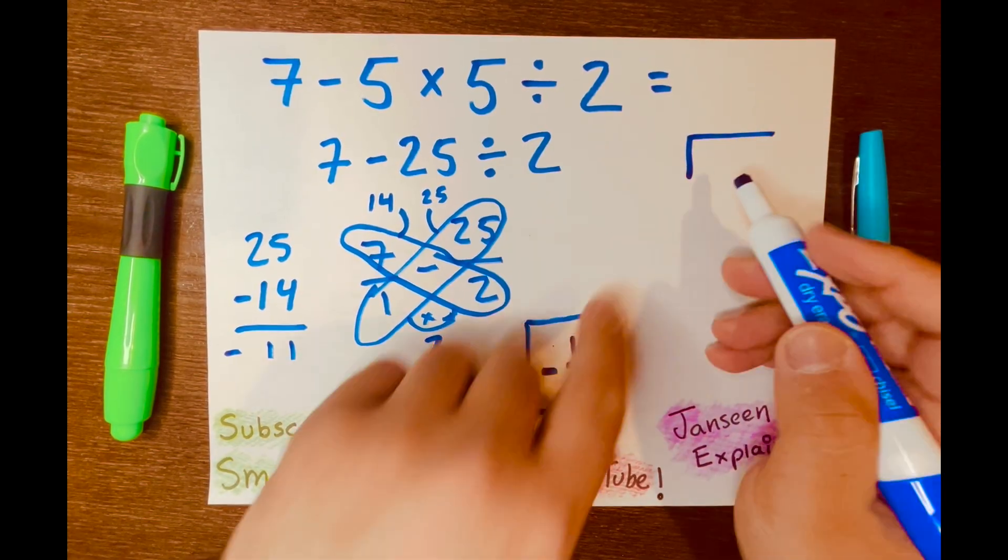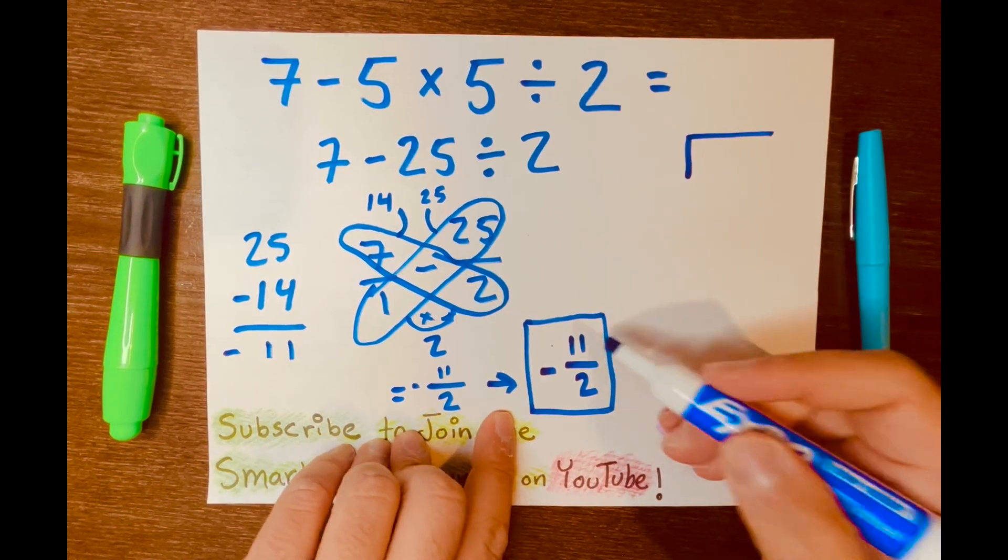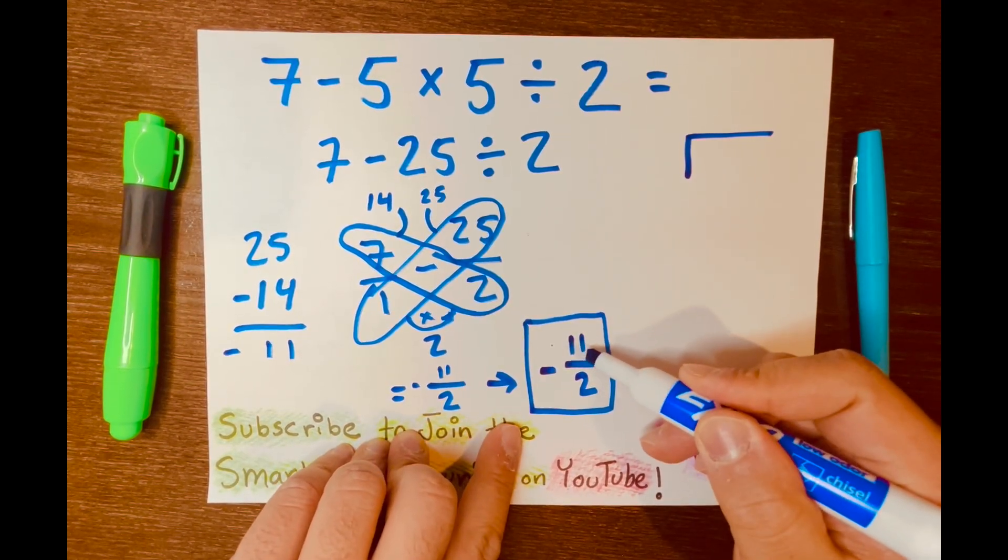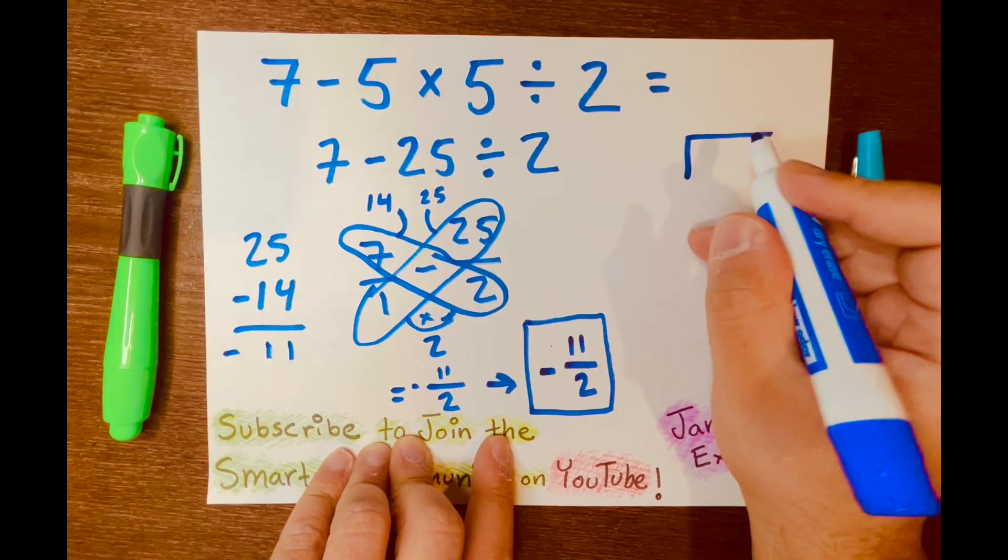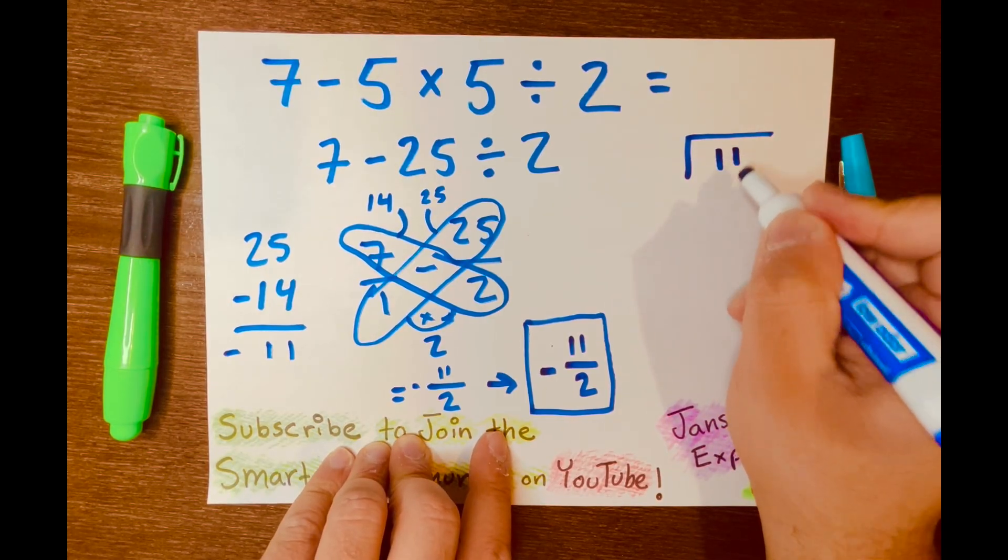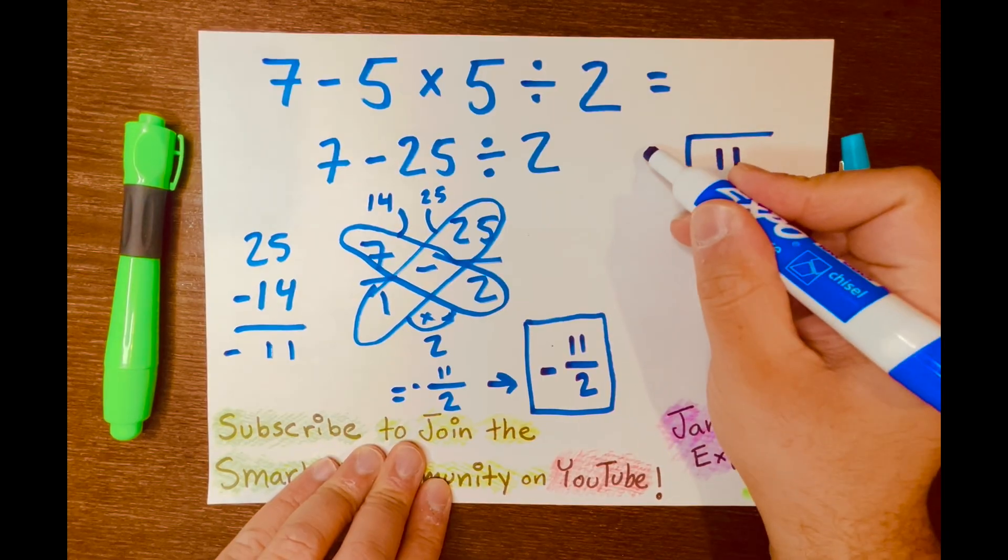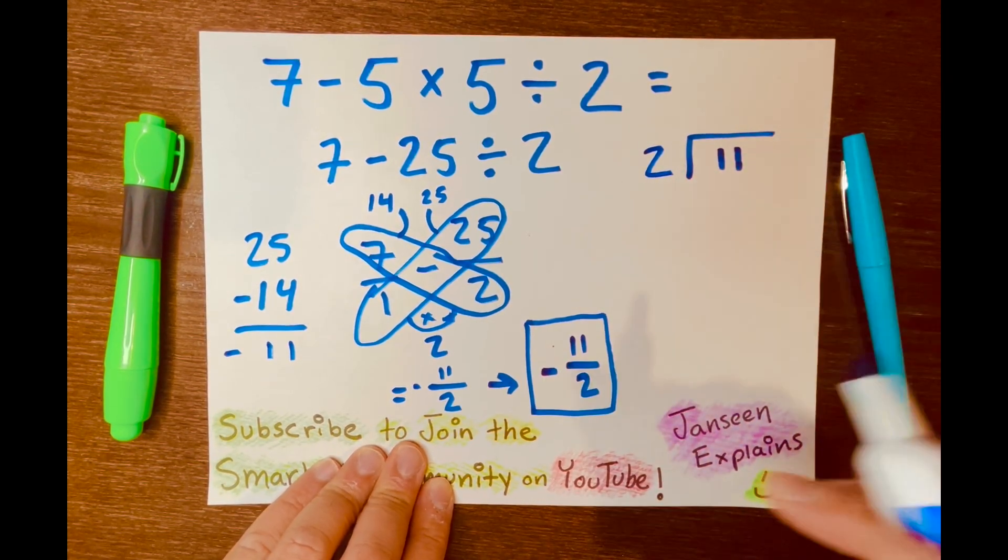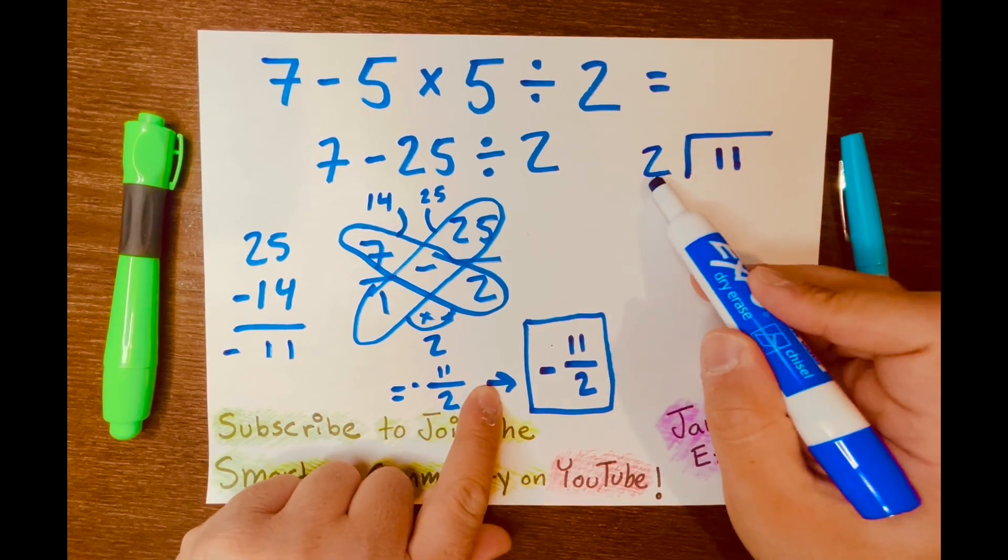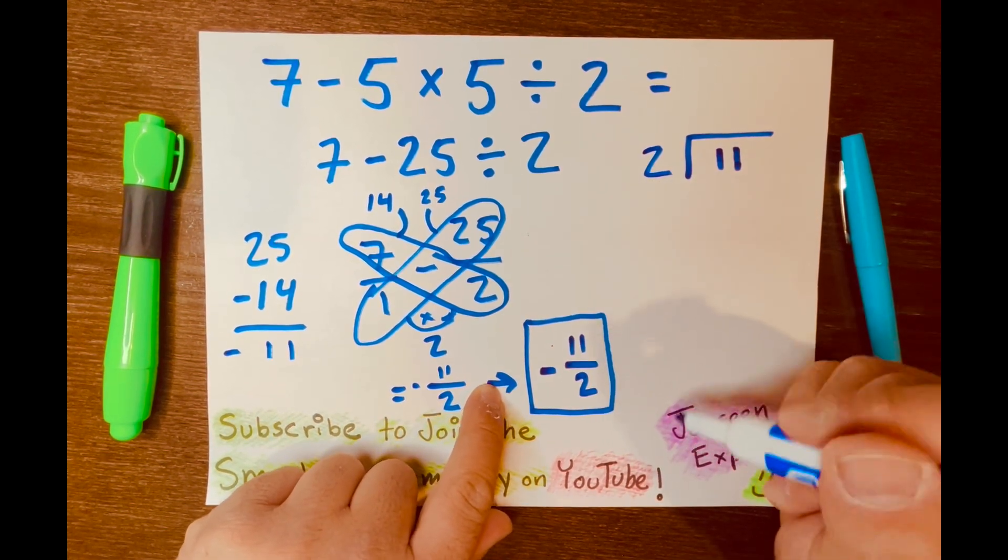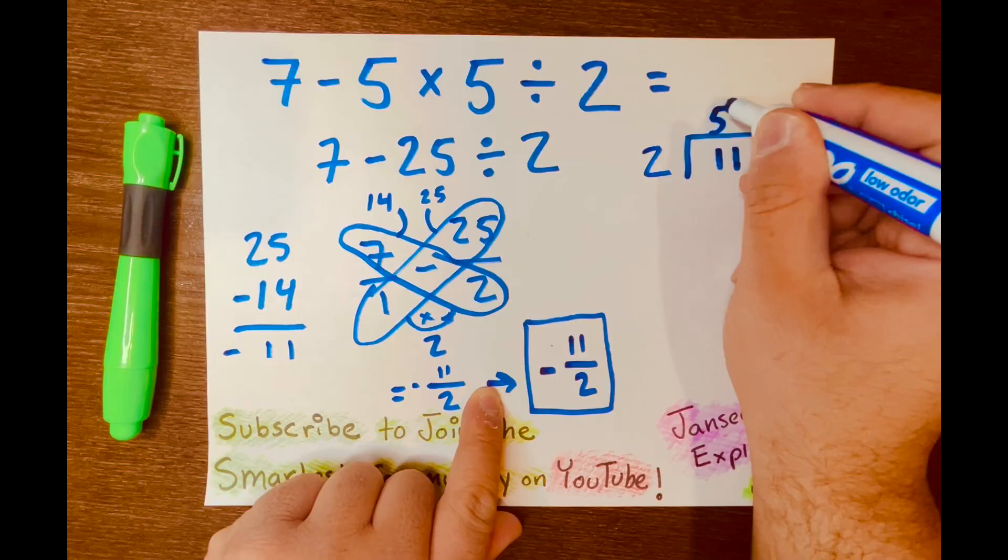So that is the long division bar or symbol. And the 11 is your dividend, so it goes inside the long division symbol. And then the 2 is the divisor, so it goes outside the long division symbol. And how many times can 2 fit into 11? Five times. So I'll write 5.